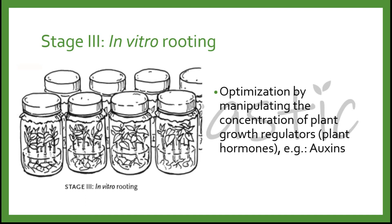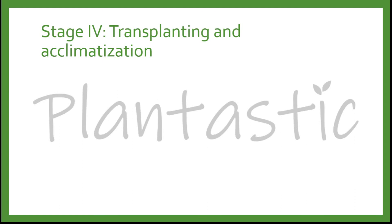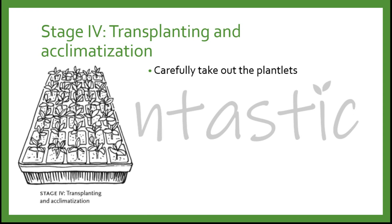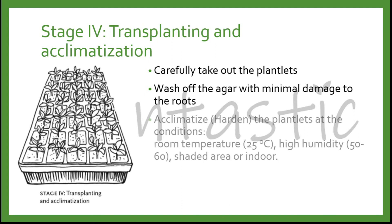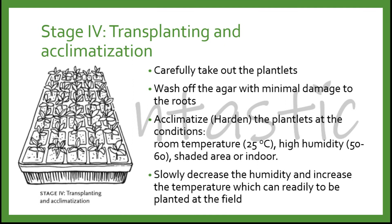Lastly, Stage 4 is transplanting and acclimatization. Acclimatization, also known as the hardening process, can be split into primary and secondary stages. The rooted plantlets are taken out carefully, and the agar is washed off without damaging the root system, or with minimal damage. It is recommended to acclimatize the plantlets at room temperature of 25 degrees Celsius, humidity around 50 to 60%, at a shaded area with indirect sunlight or under indoor lighting. This allows the plantlets to adapt by slowly decreasing humidity and increasing temperature to field conditions. After hardening, the plants are ready to be planted in the field.